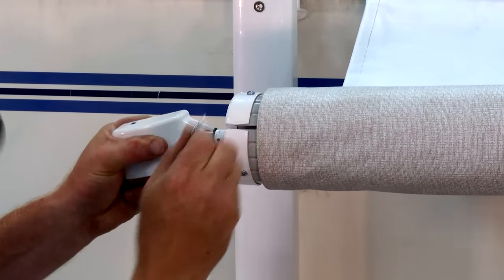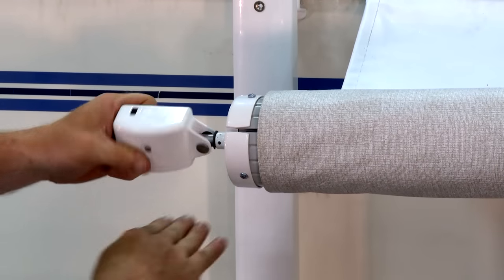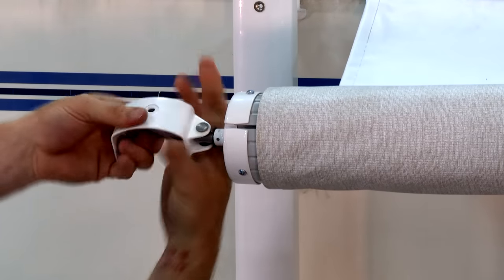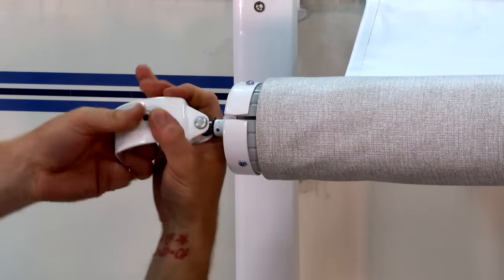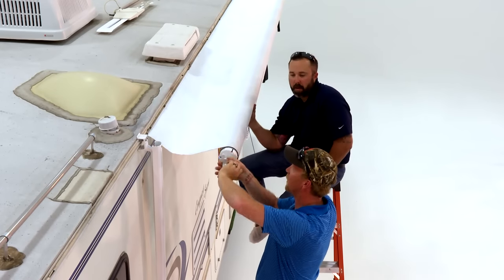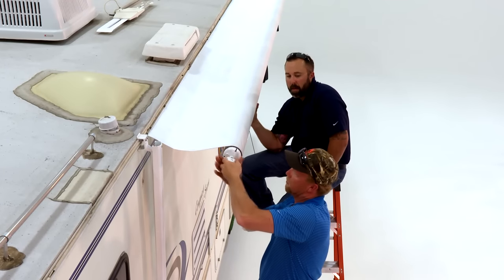Next, firmly grasp the end cap. Remove the cotter pin and put the recommended amount of tension back onto the spring assembly by winding the end cap in the direction indicated on top of the cap. The corresponding number of rotations is based upon the size of your awning.